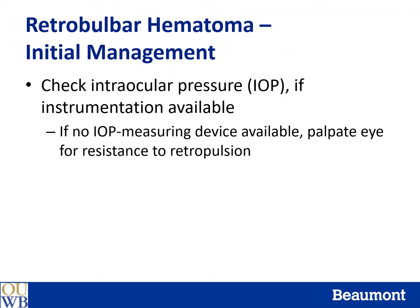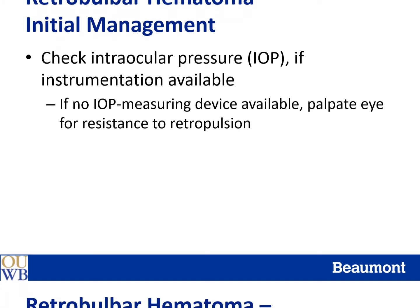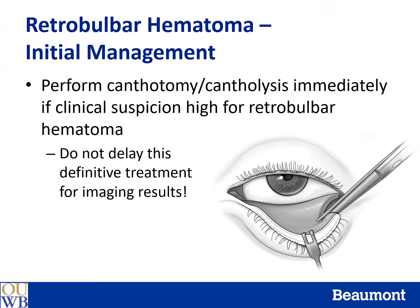Check intraocular pressure if equipment to do so is available. If you do not have access to an IOP measuring device, palpate the eye for resistance to retropulsion. If the eye feels harder than the fellow eye, the IOP is likely quite elevated. If your clinical suspicion is high enough for a retrobulbar hemorrhage, a canthotomy cantholysis should be performed immediately. Do not wait for the results of imaging studies to confirm your clinical suspicion, and do not wait for consultation with an ophthalmologist. These delays may result in permanent vision loss.